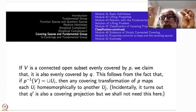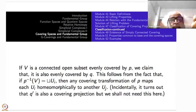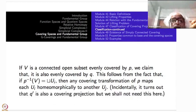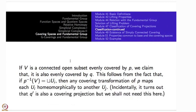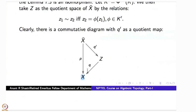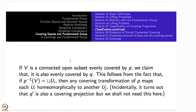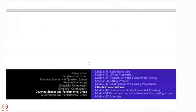Each Uᵢ is connected since v is connected, so the Uᵢ's are connected components of p⁻¹(v). Every covering transformation maps each Uᵢ homeomorphically onto another Uj — it shuffles them. So the action of covering transformations shuffles the components. Incidentally, this proof also shows that q′ is a covering projection — that is a sort of extra bonus.